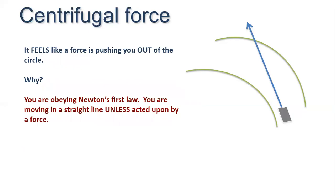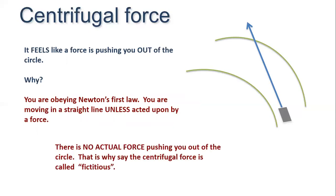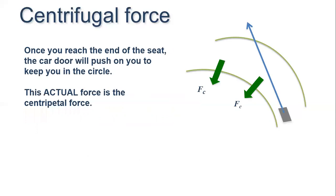You are obeying Newton's first law — you are moving in a straight line unless acted upon by a force. There is no actual force pushing you out of the circle; this is why the centrifugal force is fictitious. Once you reach the end of the seat, the car door will push on you to keep you in the circle.